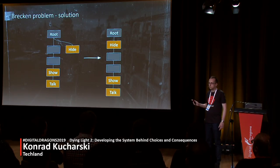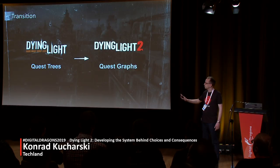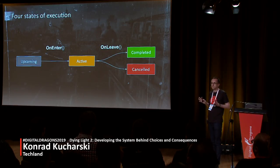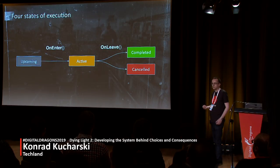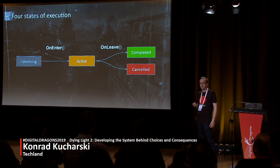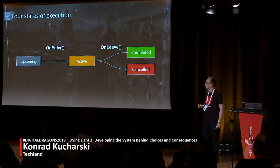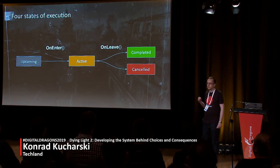We had a long struggle with these problems, and it led us to the main idea behind the execution of quests in Dying Light 2. Now in the realm of graphs: a single logic starts in an upcoming state, idle until it receives the first signal, at which point it becomes active. The logic is informed about this with an on-enter callback, where most logics execute most of their code. When active, it receives an update each frame, and from that state it can either decide to finish itself and become completed, or be cancelled by another logic and become cancelled. Either way, it is notified via an on-leave callback.